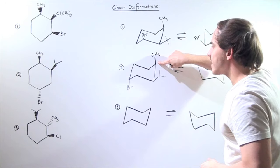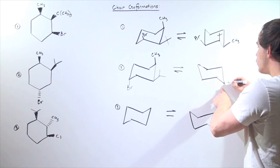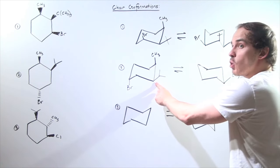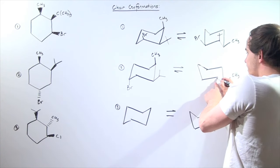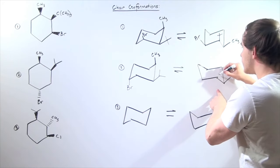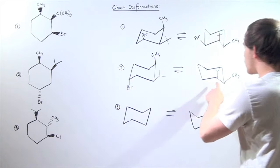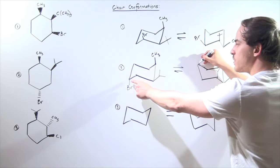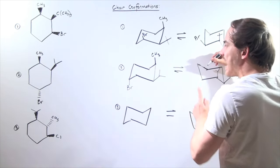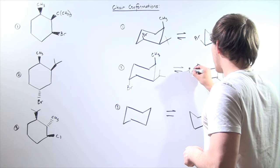So the methyl carbon is now here, going from axial to equatorial — let's draw our equatorial. Next is isopropyl: isopropyl goes to this carbon, going from being equatorial to axial, so it's right over here. Finally, we go two carbons over from this position, so this carbon is now here, and our bromine goes from being axial to equatorial — so this must be our bromine.